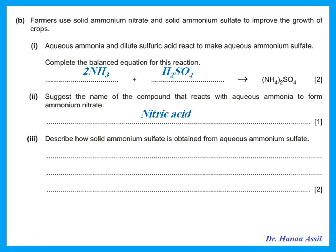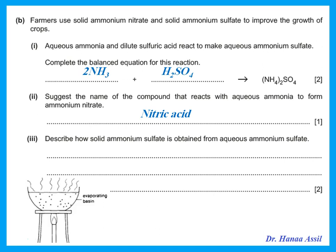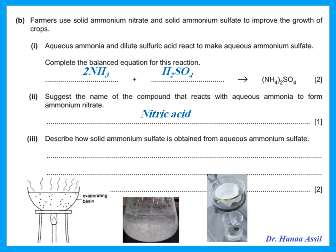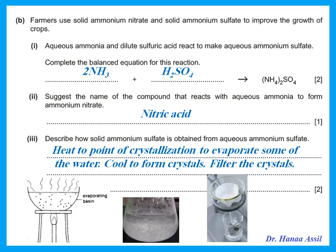Describe how solid ammonium sulfate is obtained from an aqueous ammonium sulfate solution. To get the crystals: heat the solution to the point of crystallization to evaporate some of the water, then cool so it forms crystals, then filter the crystals. This is how you explain crystallization.